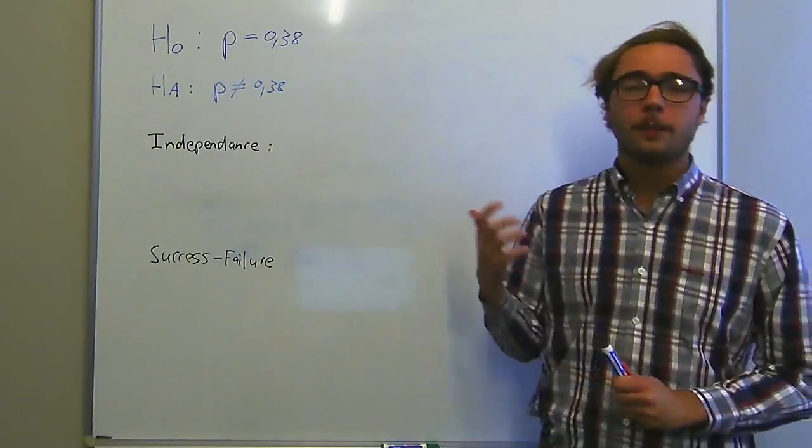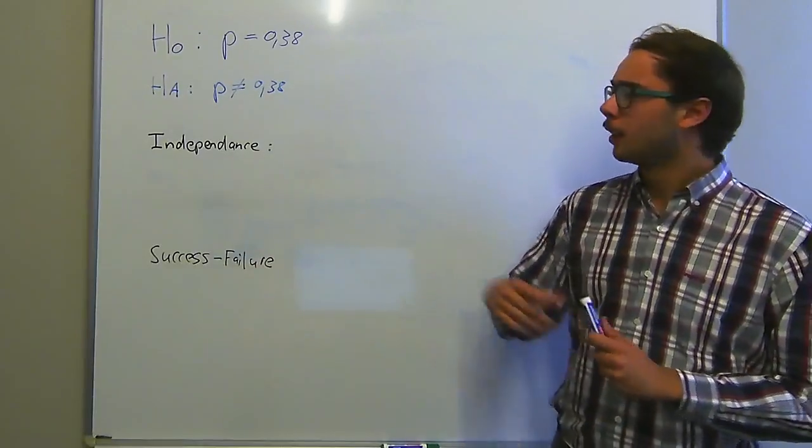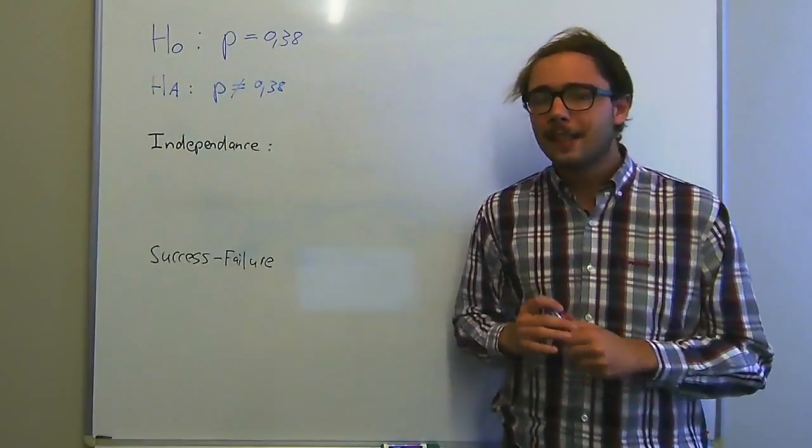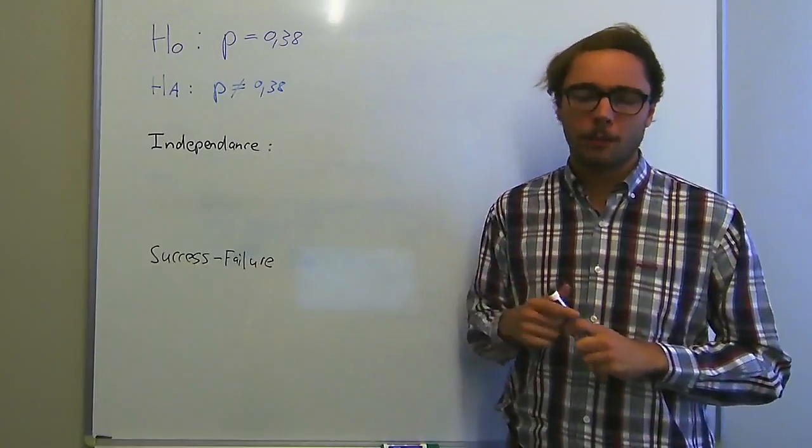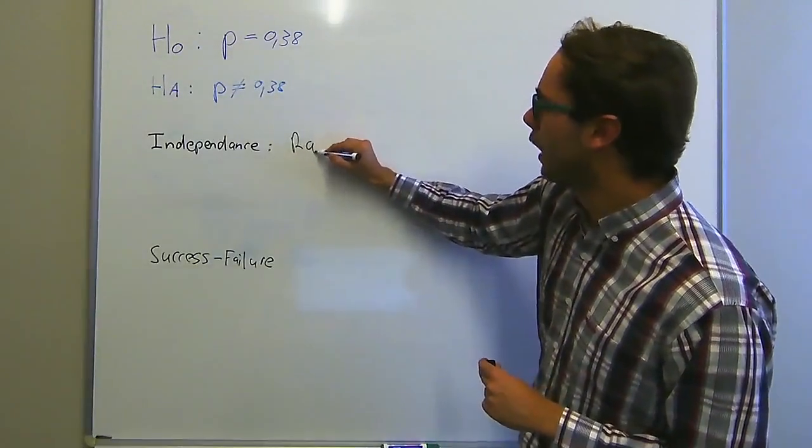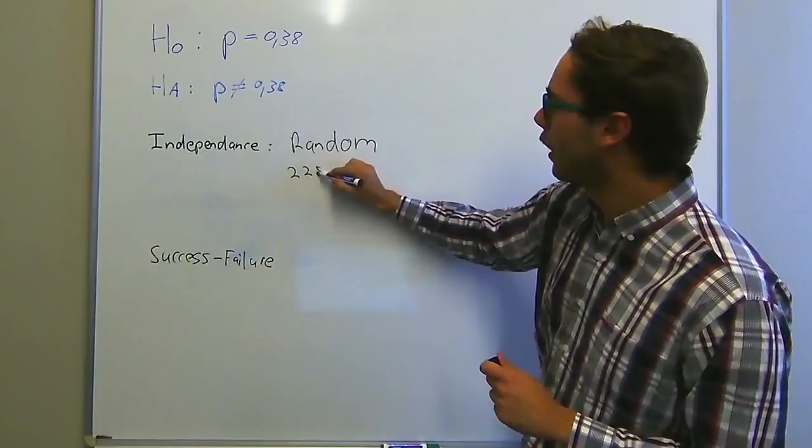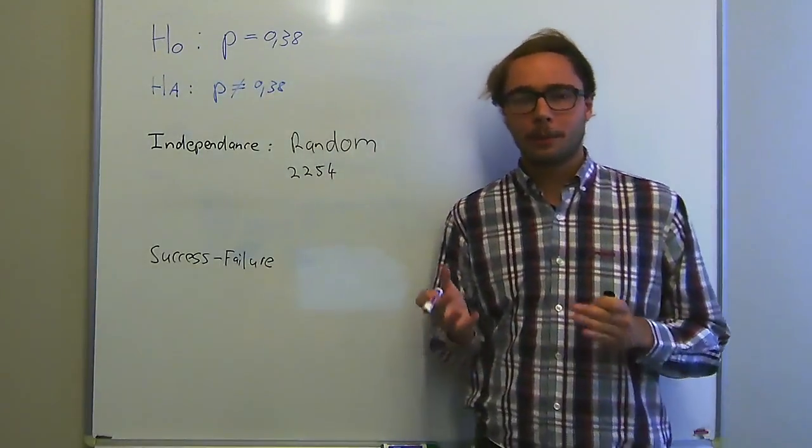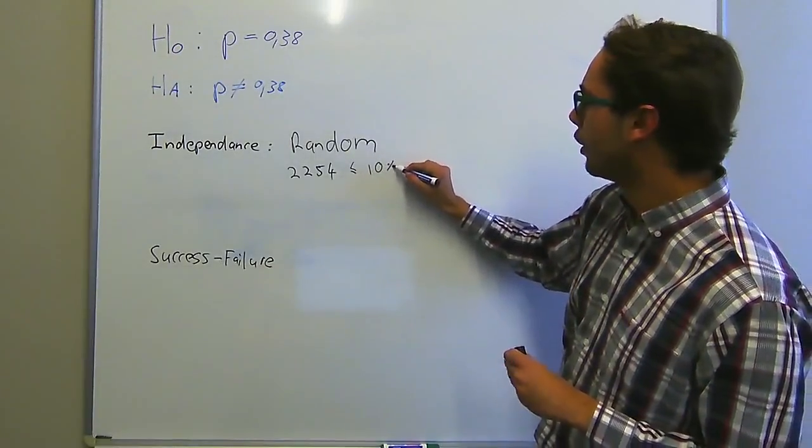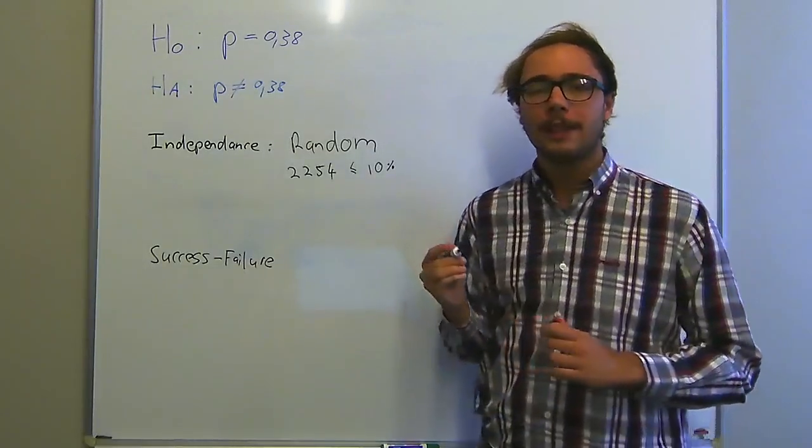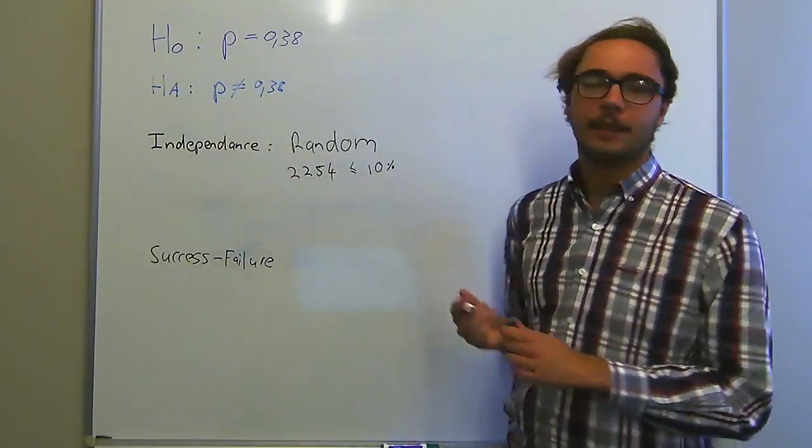Before we can proceed, we have to check whether we can apply normal distribution. To do that, we have two tests: independence and success or failure. When we look at independence, we first ask: is the sample random? The question doesn't explicitly say that the sample is random, but in this case we assume that yes it is. Next, we look at the sample size, which is 2,254. If we imagine the number of Americans that use cell phones, it will be a very big number. Therefore we can say that is less than 10% of the population size. Because we can say that, we can say that the users are independent of each other and the test for independence is met.